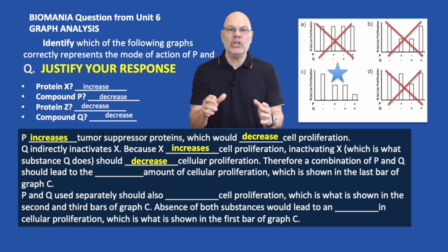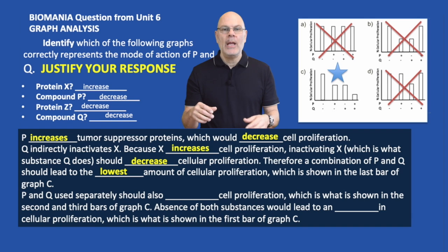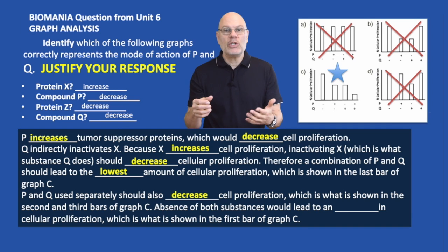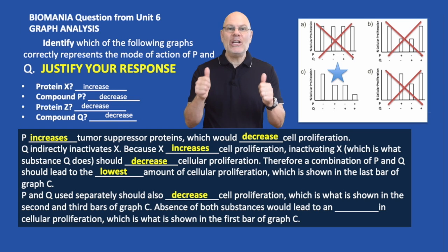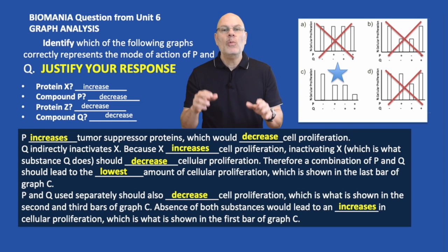Therefore, a combination of P and Q should lead to the lowest amount of cellular proliferation, which is exactly what's shown in the last bar of graph C. P and Q used separately should also decrease cell proliferation, which is shown in the second and third bars of graph C. Absence of both substances would lead to an increase in cellular proliferation, which is shown in the first bar of graph C, which is essentially the control group.